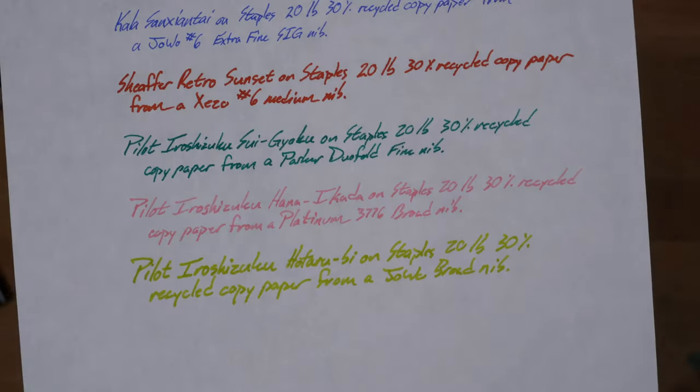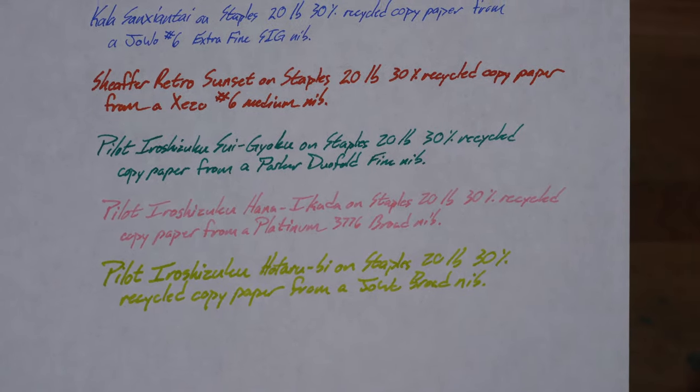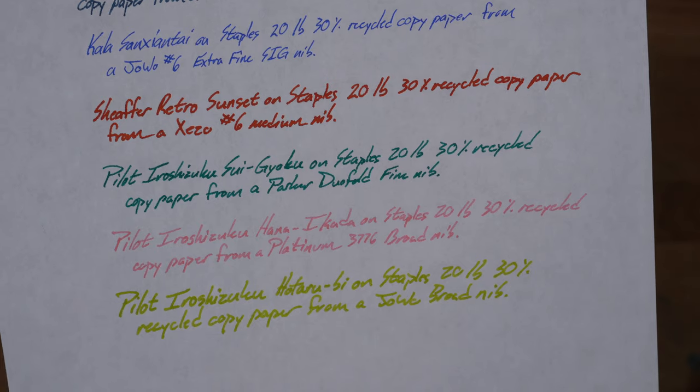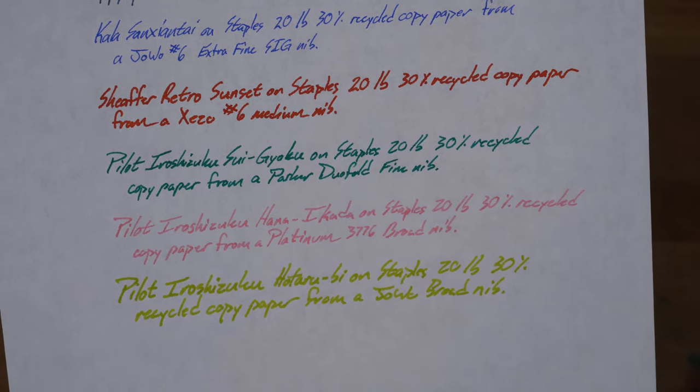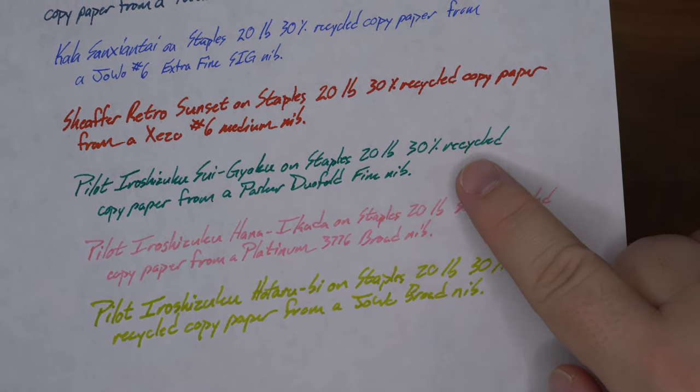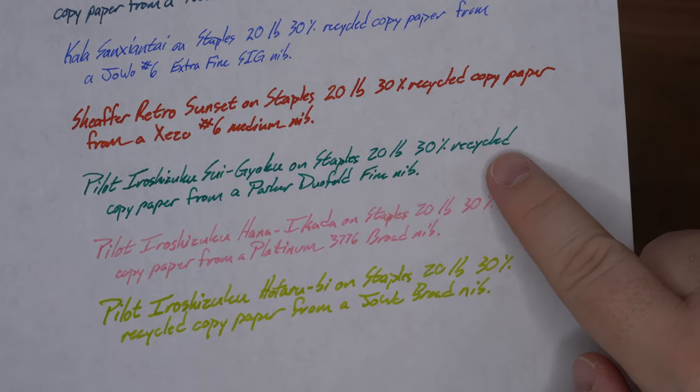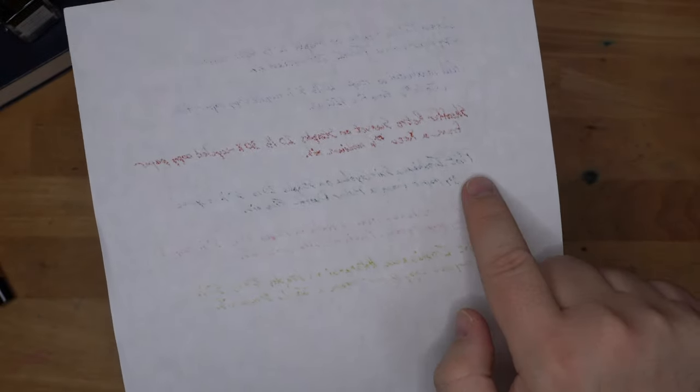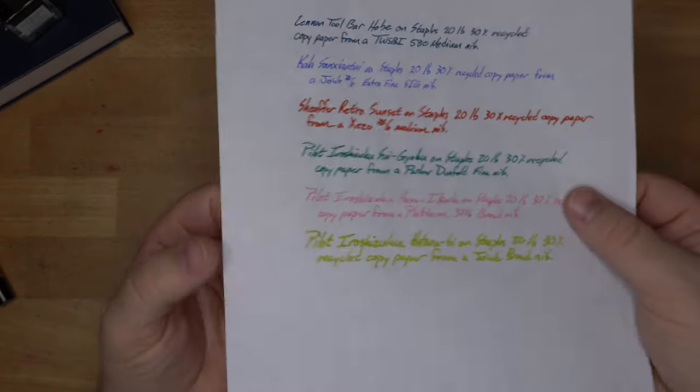I also got it on some different papers. Here it is on the Staples 30% recycled 20-pound copy paper, the bad paper from your office. You can see there is a little bit of feathering there and maybe a little bit of spread. The fine nib of this pen came out looking about the same as the broad nib on a Platinum 3776, which is because I think this ink is on the wet side and it's getting into the paper a little bit. You can see here that it did bleed through a bit. It's not terrible. It's actually doing better than that Retro Sunset. I'd say not great for your office copy paper, but we can keep it on the good stuff probably.